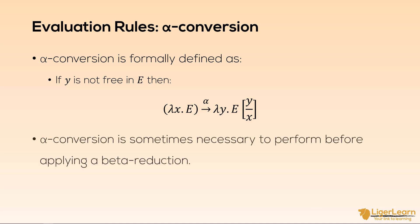In summary, alpha conversion — or alpha renaming — is another reduction rule which is sometimes necessary to perform before applying a beta reduction. Some compilers include an alpha conversion stage so that all variable names become unique, to simplify subsequent processing and avoid any potential name capture problems.